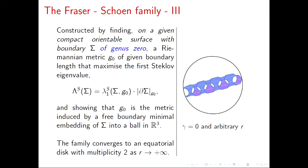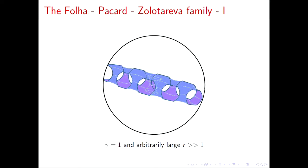This family converges to the equatorial disk with multiplicity 2 as the number of boundary components goes to infinity. The next family, produced by Fofolia, Pakar, and Zolotareva, has a very similar picture except that genus is added — some neck in the middle between the disks. The method of construction was a gluing method.